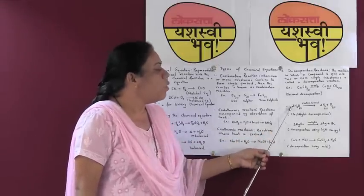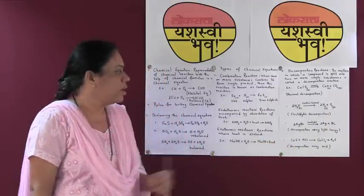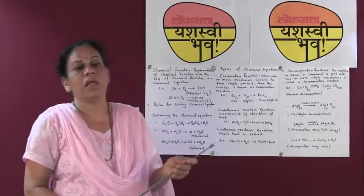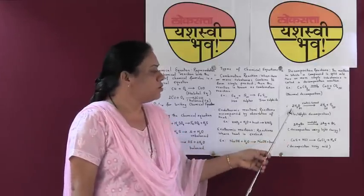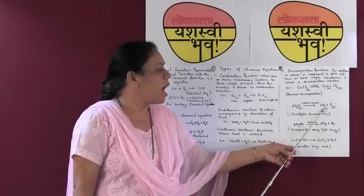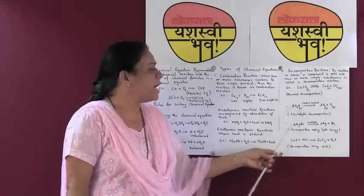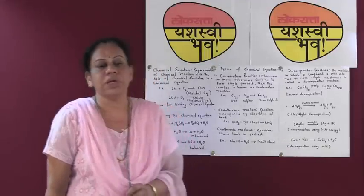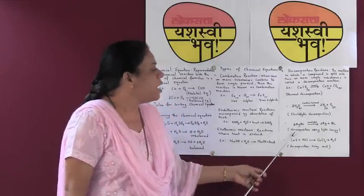Another example is decomposition by passing electric current. In lower standards you have studied about electrolysis of water: when we pass current through water, it splits to form hydrogen and oxygen gas. These reactions are called electrolytic decomposition reactions.